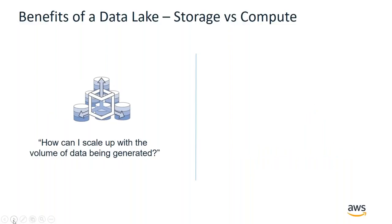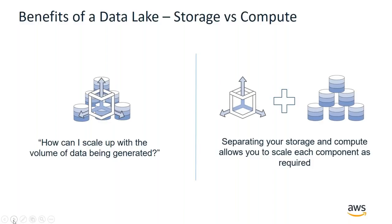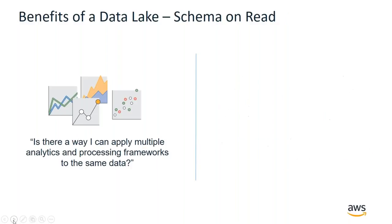Let's scale up. A lot of these data sources are truly massive in terms of volume, variety, and the velocity of the data. One of the best ways to scale up efficiently is to separate storage and compute so that we have different dials and can scale those separately. If I have different analytics and processing frameworks I want to apply to the same data, I can do that because I haven't forced this data into a predefined schema. I may have machine learning or AI tools, or more traditional BI charts and graphs. My data scientists and business analysts can experiment with data and potentially fail fast.